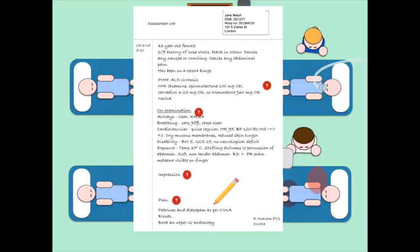Liver function tests, LFTs, will obviously be important to check too. Has there been any derangement in the liver function tests? As an extension of this, check the clotting too. Jane might need vitamin K if her INR is markedly deranged. The ultimate investigation and treatment however Jane will require is an upper GI endoscopy to visualise the esophagus and stomach for the potential source of bleeding and to treat it.